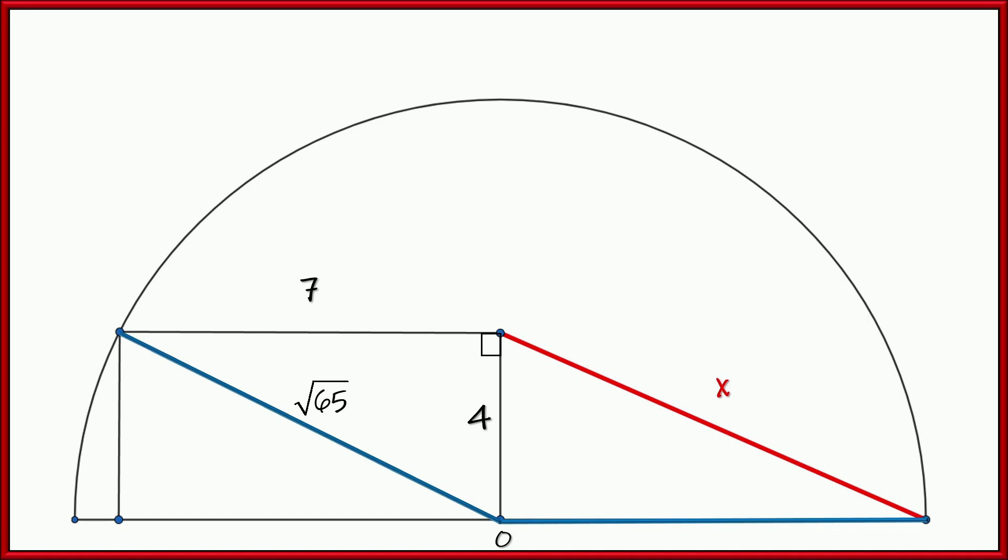So now we know that the radius is the square root of 65. The radius is also from here to here, which is one of the legs of this triangle. All right,